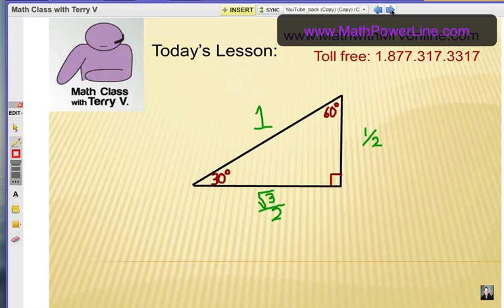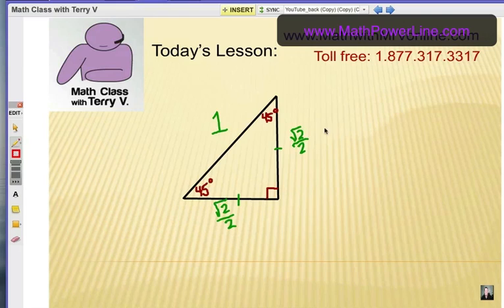Well, we have 30-60-90 triangles and the short leg will be 1/2. The long leg is √3/2. Sometimes, with some angles on the unit circle, you'll get a 45-45-90 triangle. In that case, the sine and cosine values will be √2/2 because both legs are congruent.